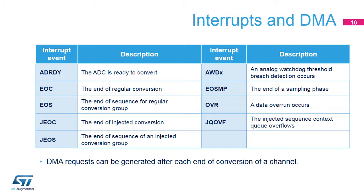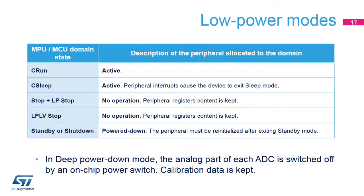DMA requests can be generated at each end of conversion when the ADC output data is ready. The ADCs are active in CRUN and C-SLEEP modes. In STOP, LP-STOP, and LPLV-STOP modes, the ADCs are not available, but the contents of their registers are kept. In standby mode, the ADCs are powered down and must be re-initialized when returning to a higher power state. There is a deep power-down mode in each ADC itself, which reduces leakage by turning off an on-chip power switch.